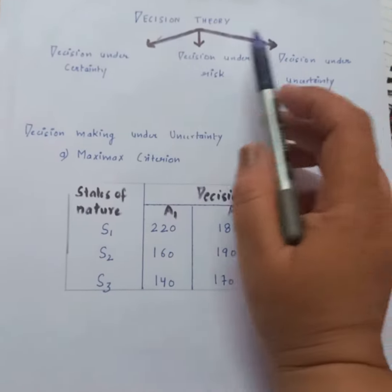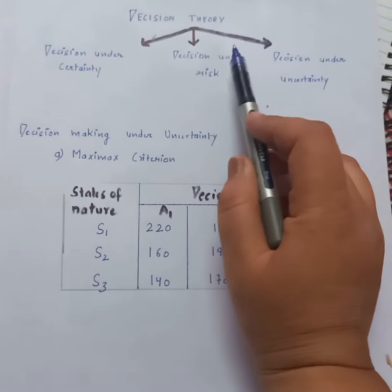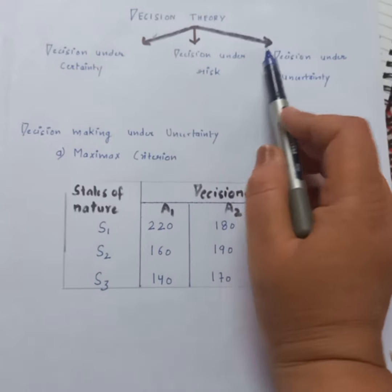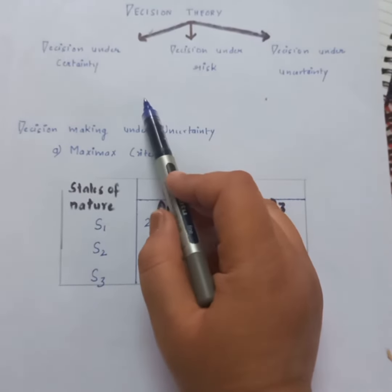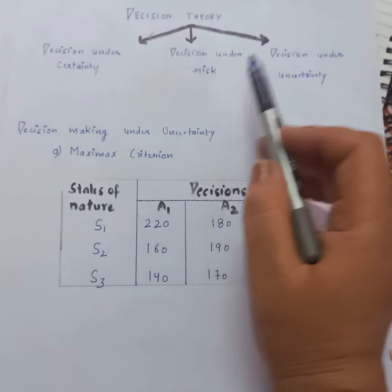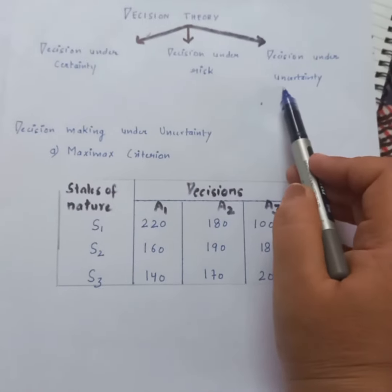Hello everyone, let's talk about decision theory. Now to understand decision theory, we need to understand decision under certainty, decision under risk, and decision under uncertainty.